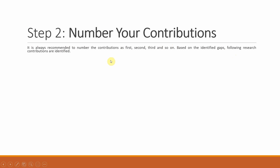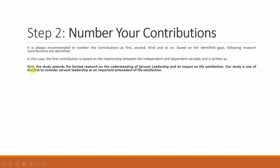The first contribution is based on the relationship between independent and dependent variables. So how do you write this? First, the study extends the limited research on understanding of servant leadership and its impact on life satisfaction. Our study is one of the first to consider servant leadership as an important antecedent of life satisfaction. This is your first contribution, and it is based on the gap that was earlier identified — you write your contributions based on the gaps you have already identified.